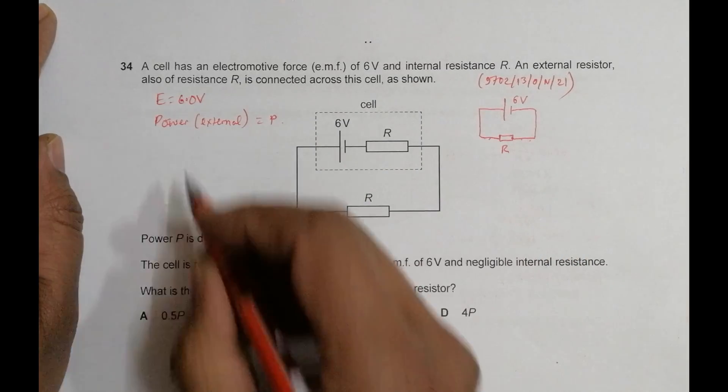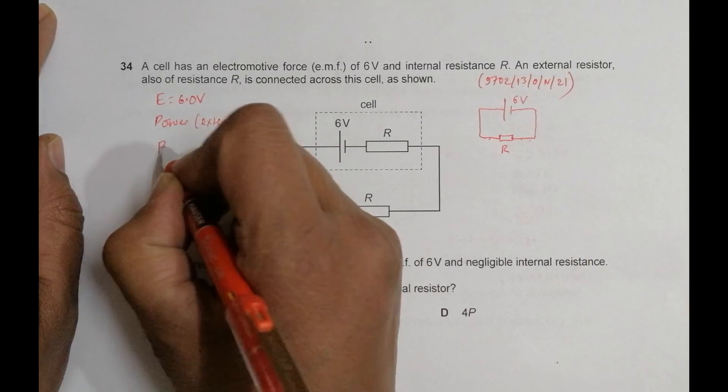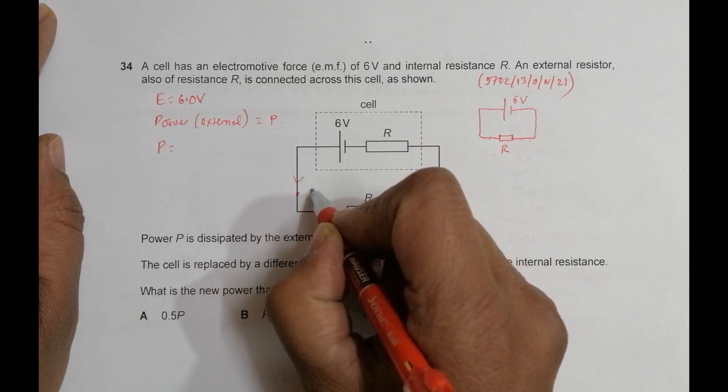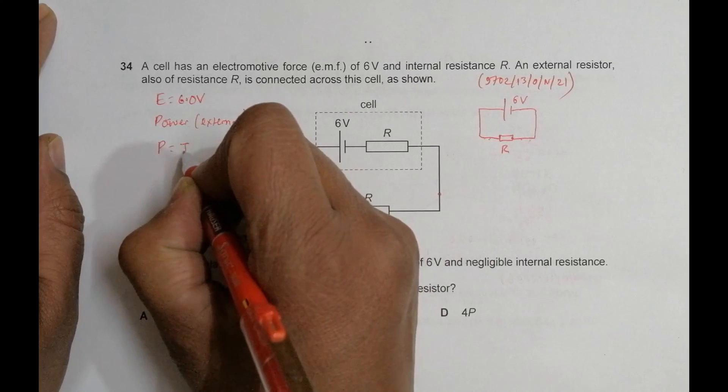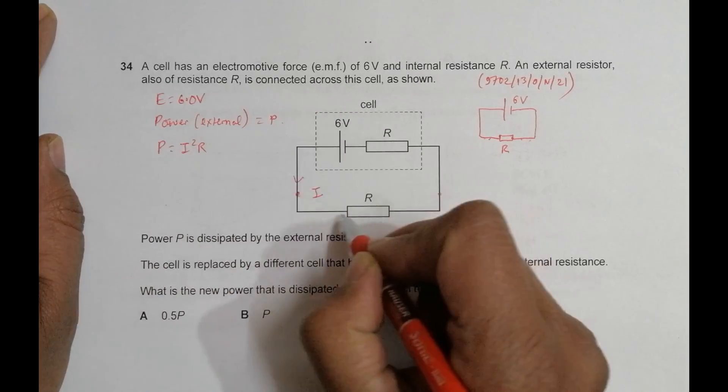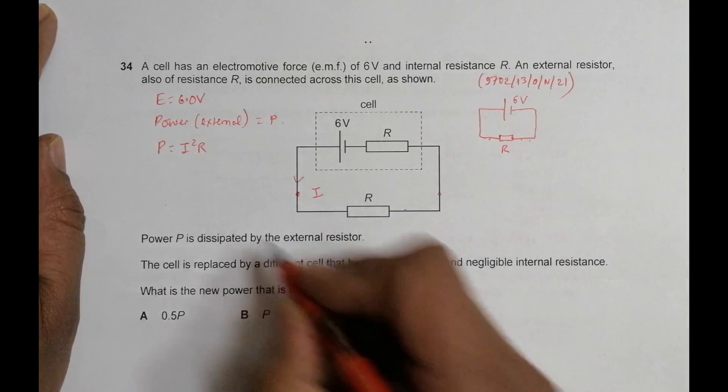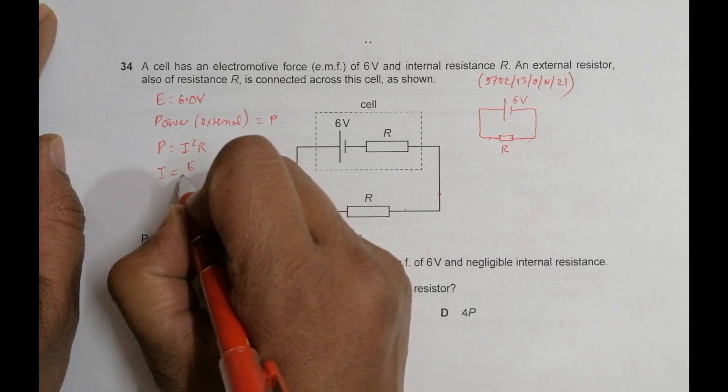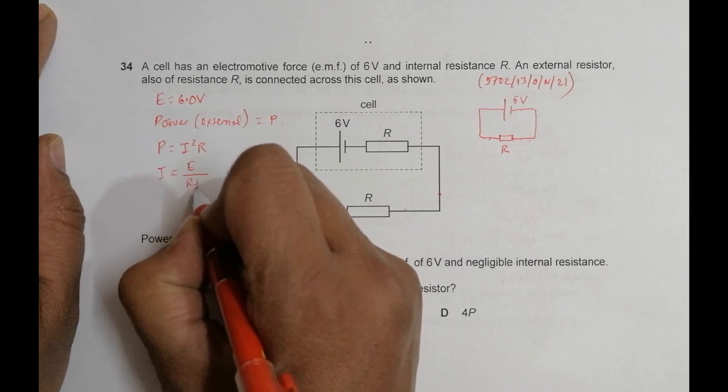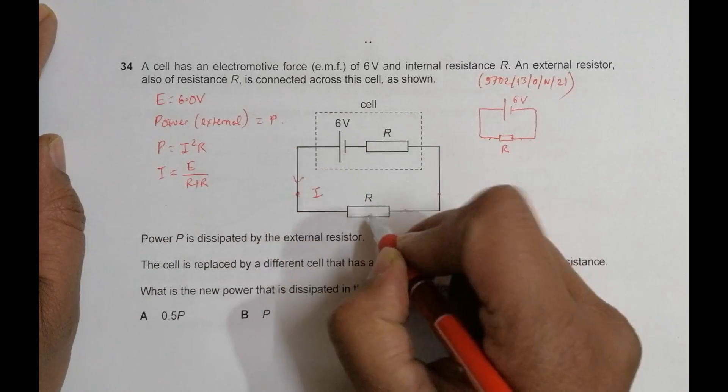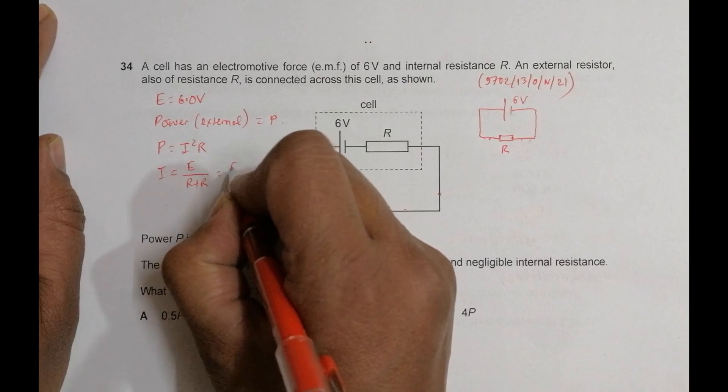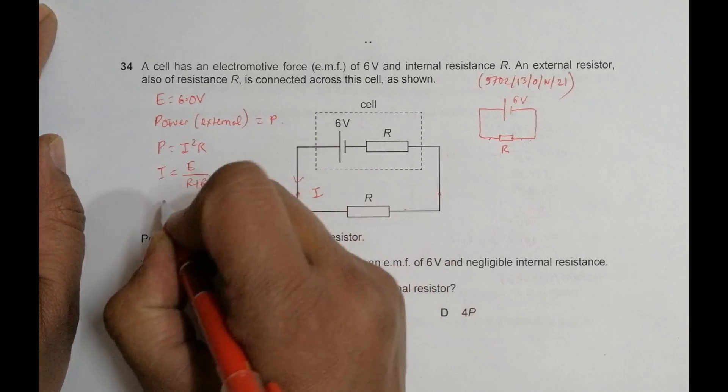First, let's find the old power. The old power P = I²R, where I is the current flowing through the circuit. The current I equals the total EMF divided by the total resistance. Since the resistances are in series, I = E/2R.